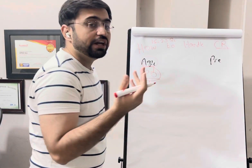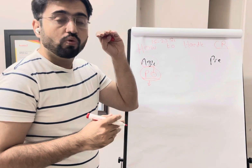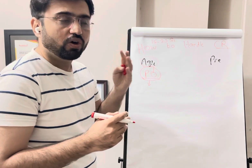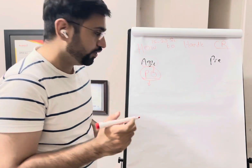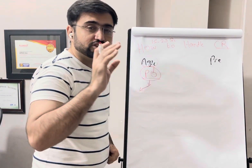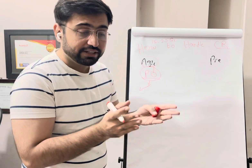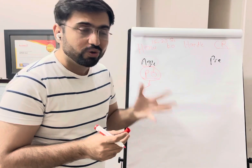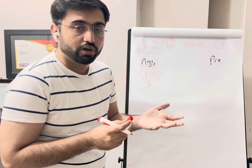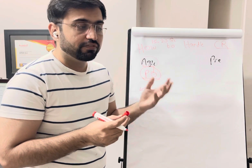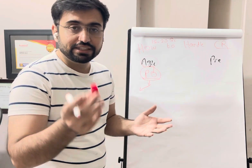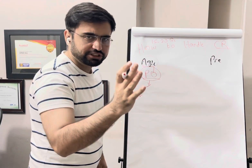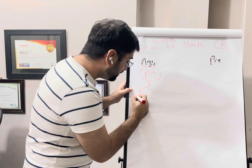Whether the change is requested to the development team or the scrum master, whoever receives it, the change goes to the product owner. The product owner evaluates the change: what is the value — very high value, high risk, medium value, or low value? If the change is so important that it can make the current sprint obsolete — meaning if you don't do it, the work becomes useless — the product owner can add that change into the current sprint in collaboration with the team.